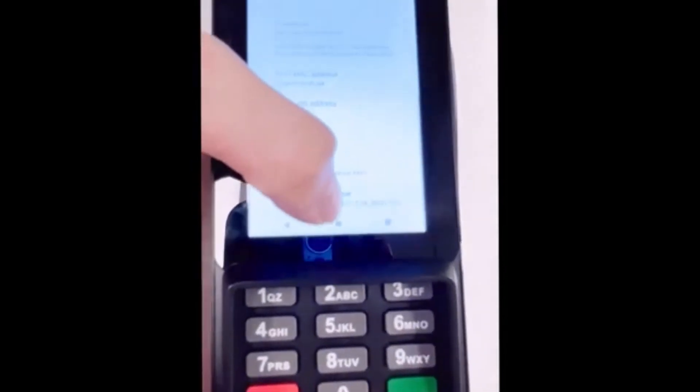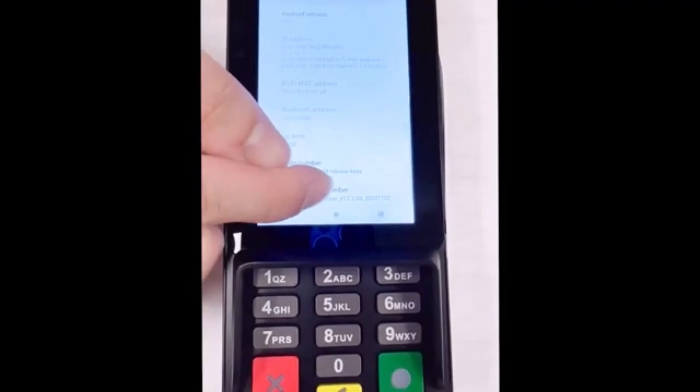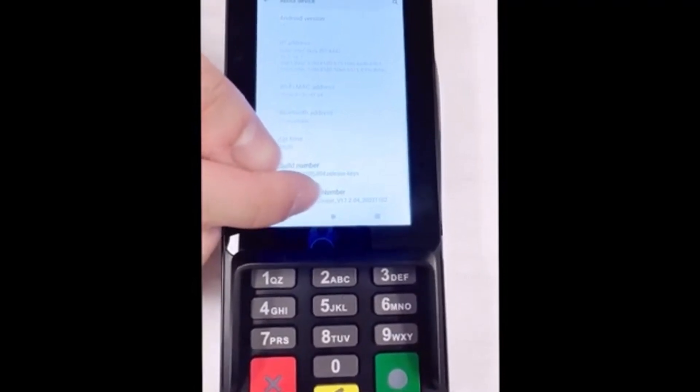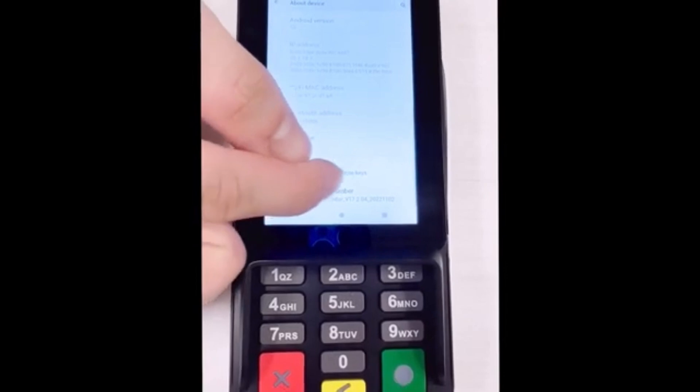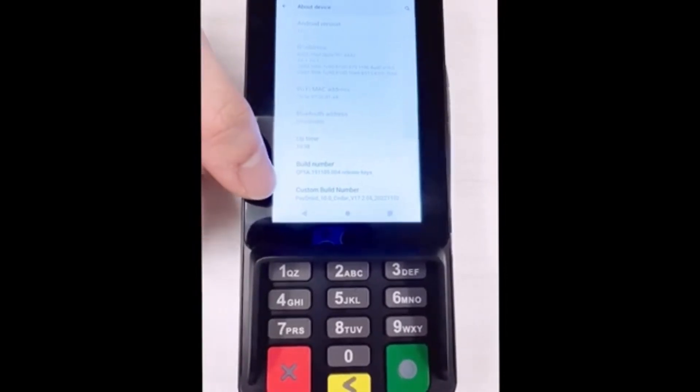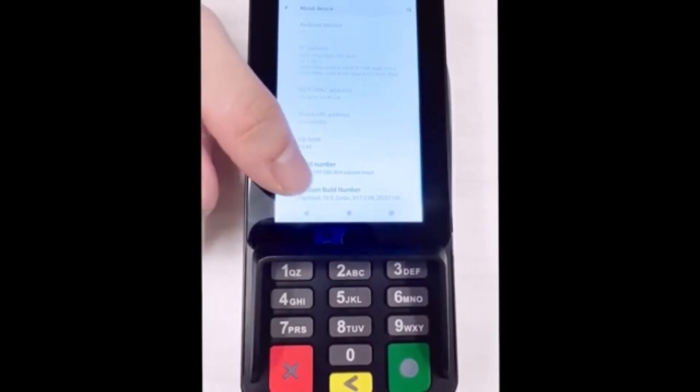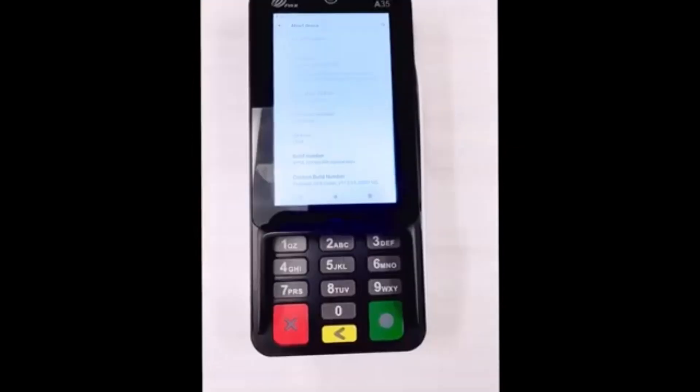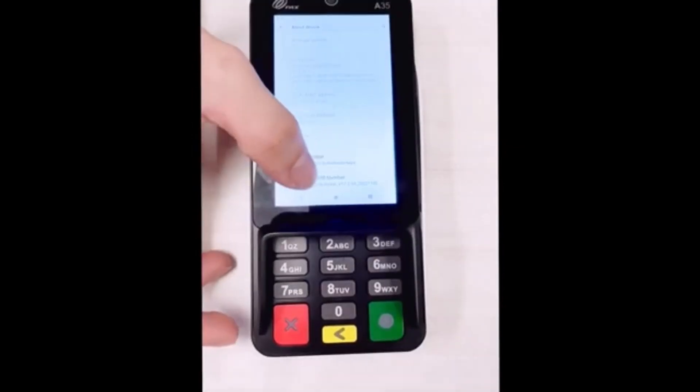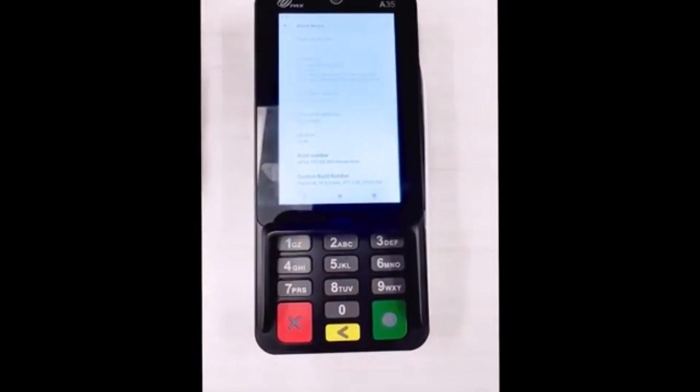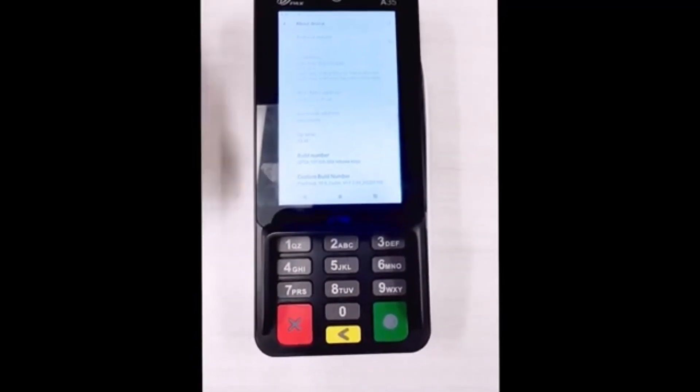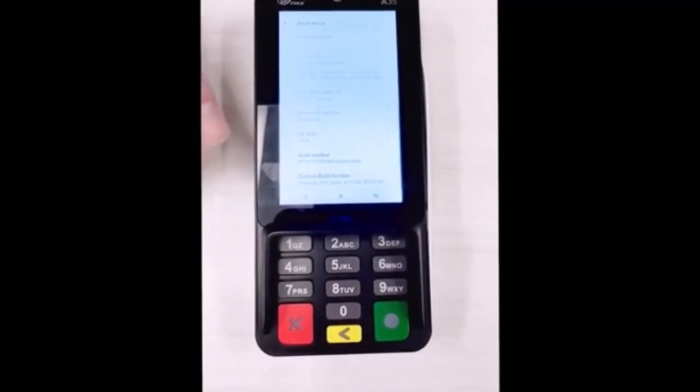You'll notice here, the number is V17.2.04. If the value is anything less than this, then you'll more than likely need to contact payment services regarding updating the firmware. If the custom build number is not V.17.2.4 and it's V.17.1.2, then you'll have to reinstall the firmware.